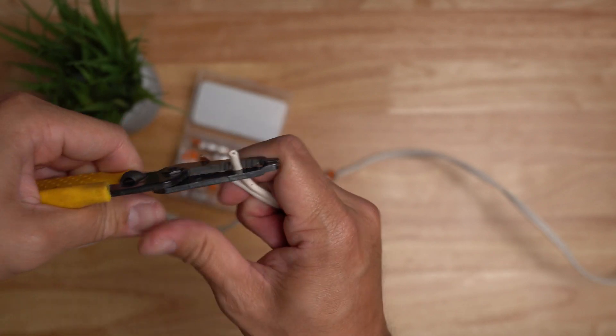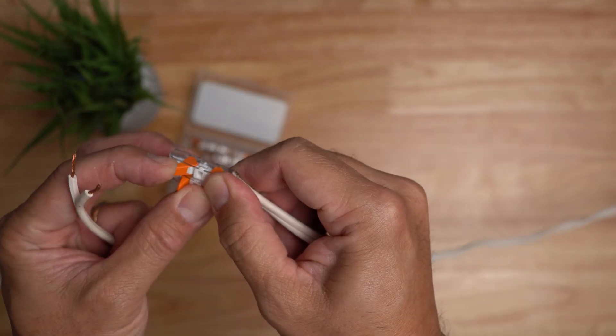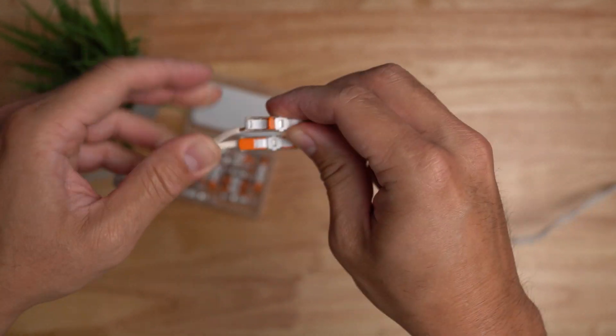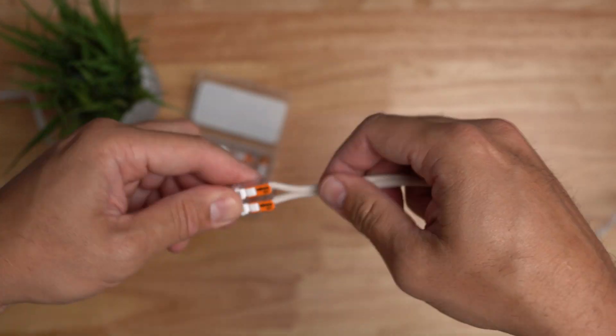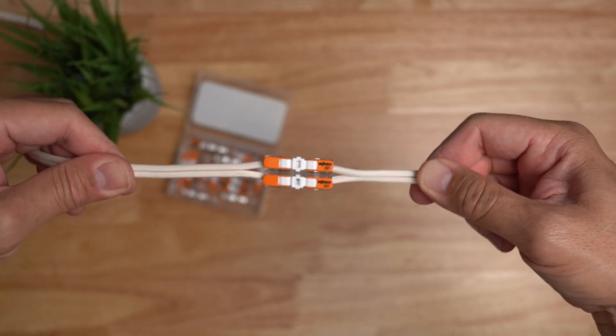Now strip the wires of the other cable, flip the levers up and insert the wires in and flip the levers down.